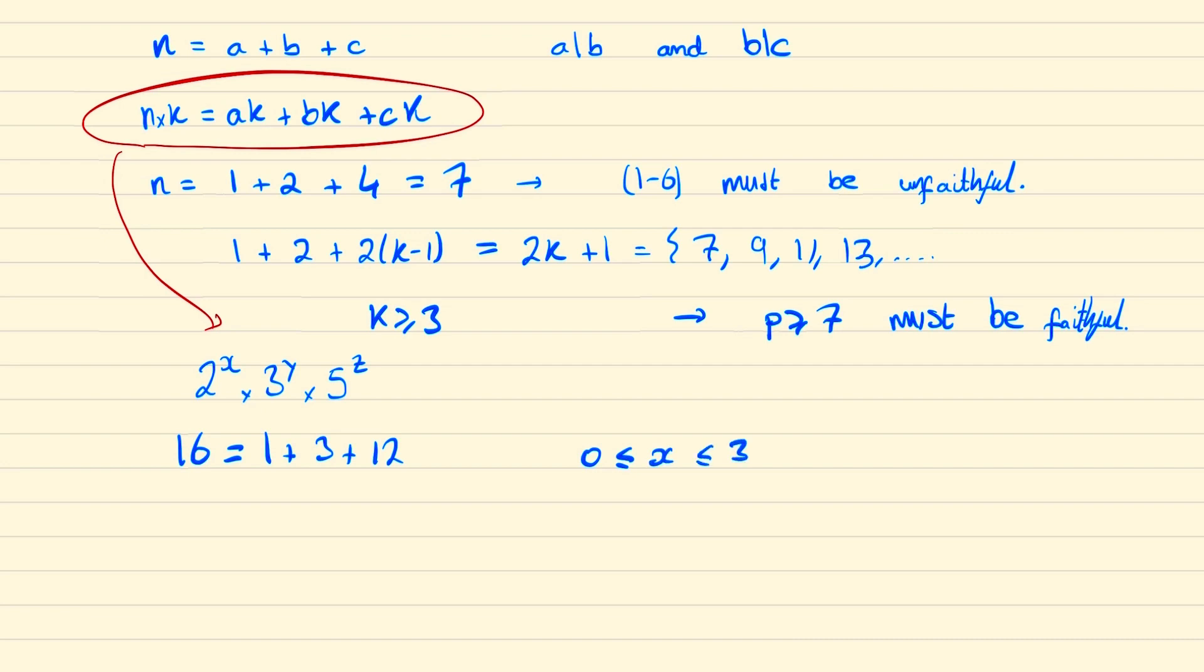We'll note when y is 2, 9 can be written as 1 plus 2 plus 6, and so by the same reasoning we know that y would be either 0 or 1. And likewise when z is 2, 25 can be written as 1 plus 4 plus 20, and so by the same reason we know z will either be 0 or 1.